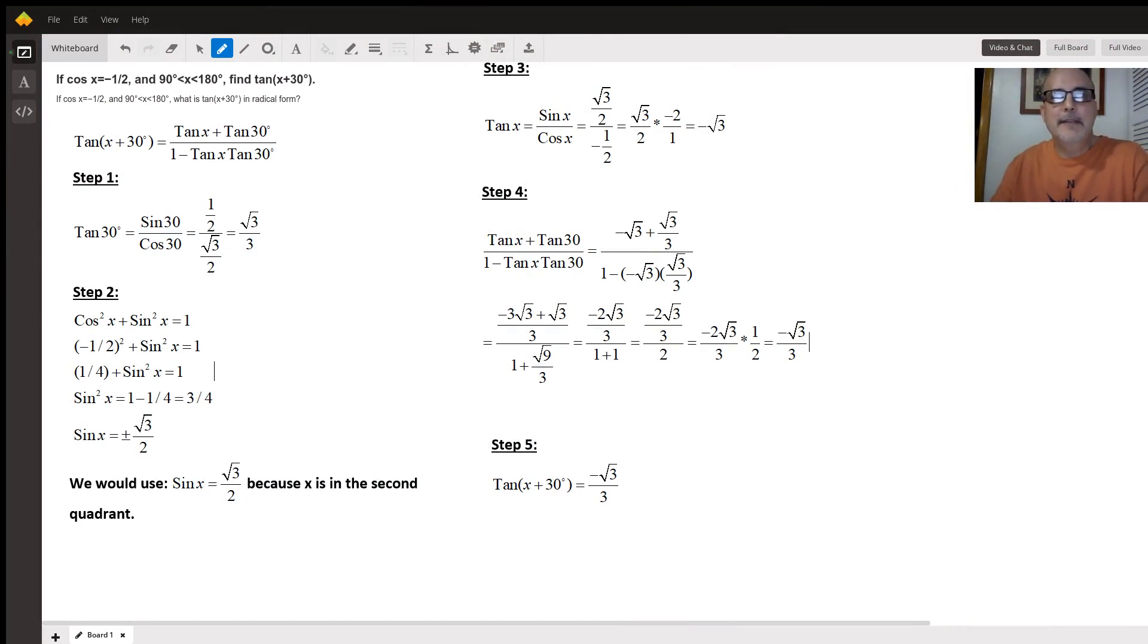Hi folks, this is Mr. Davis. I'm your local Algebra 2 teacher and today we're going to look at a trig question where we need to find the tangent of x plus 30 degrees. We're given two conditions: cosine of x equals negative one half and x is in quadrant number two.